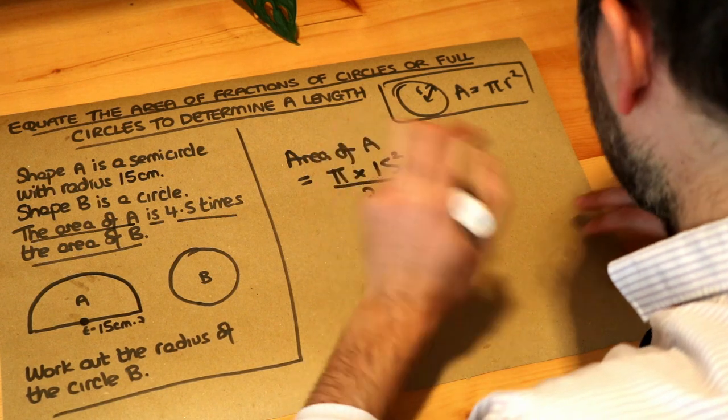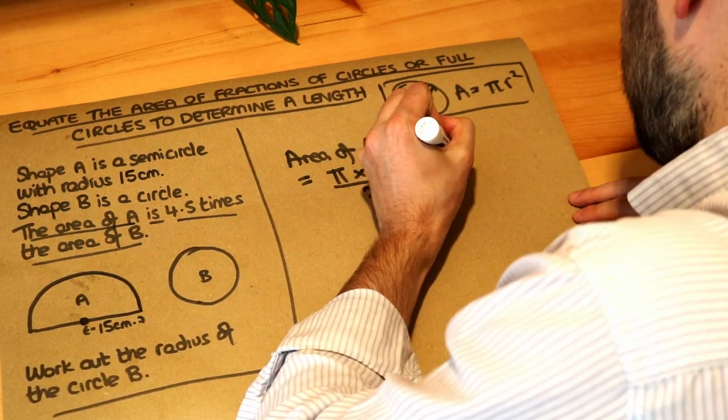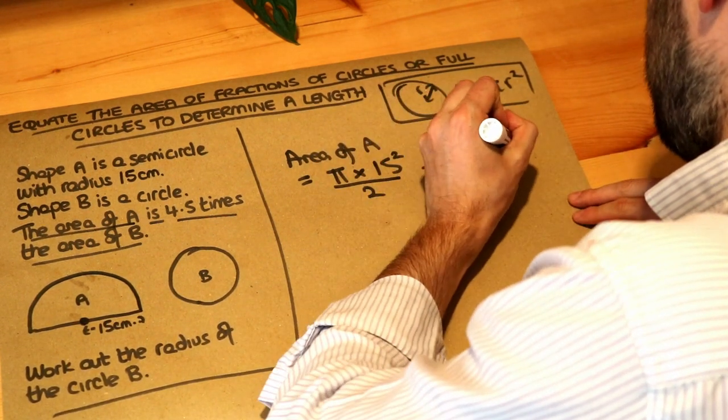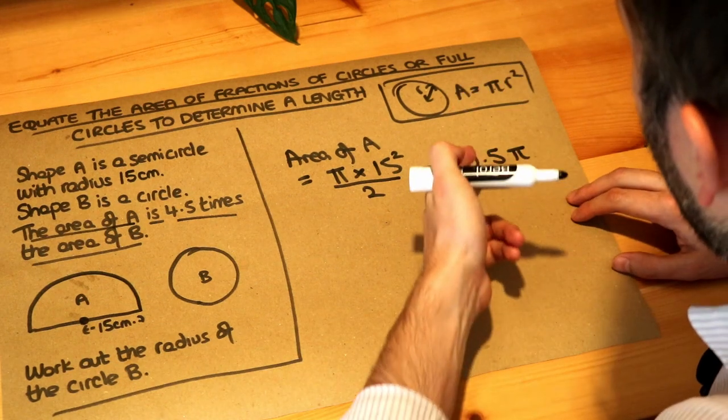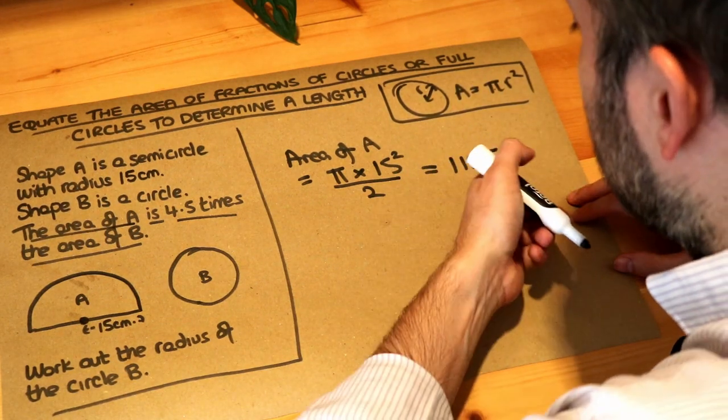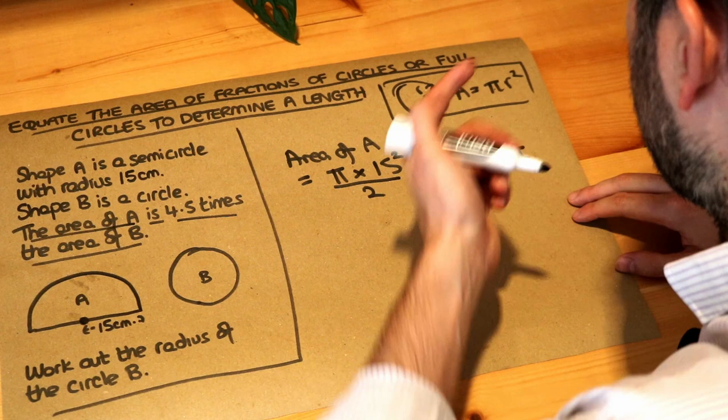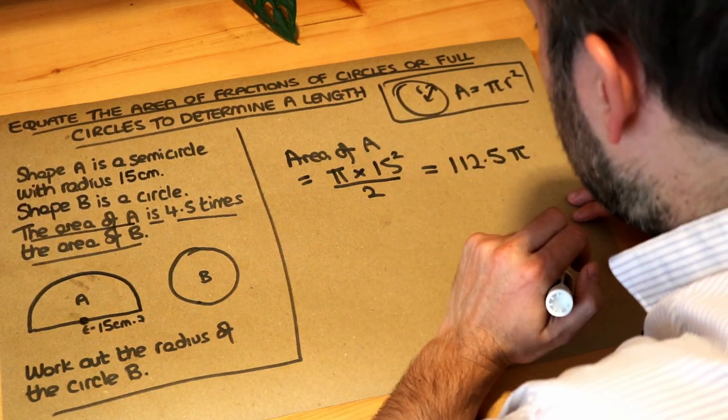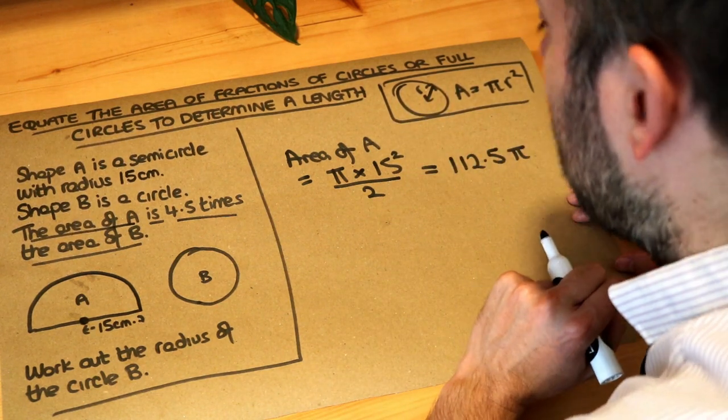Now if we do that on a calculator, I can do it in my head. I think that's 112.5π. Your calculator will leave your answer in terms of π. It might say 225 over 2π. Just leave your answers that rather than converting it to a decimal. There's a good reason for it.